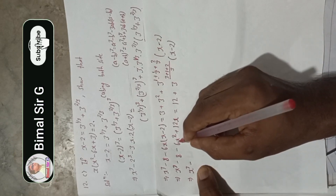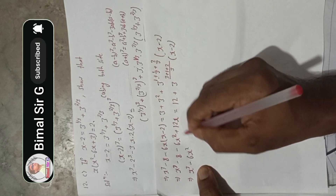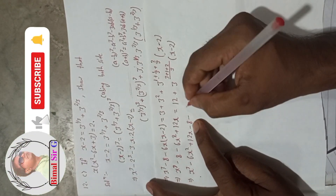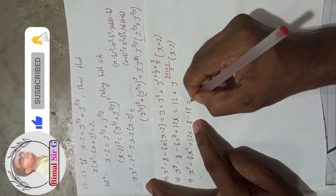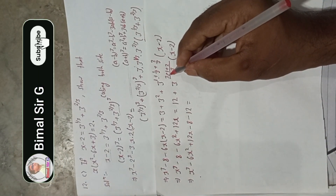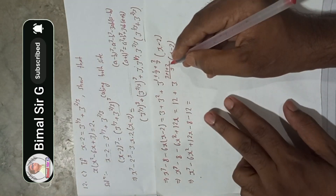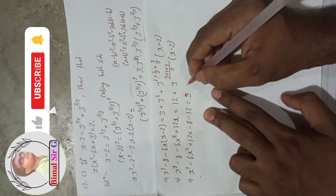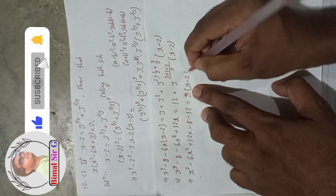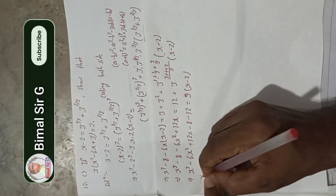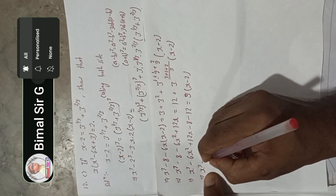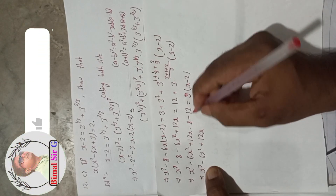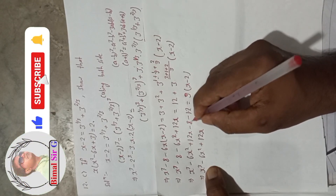So we have x³ minus 6x² plus 12x minus 8, and when the minus 12 comes to this side it becomes minus 12. This is equal to 9 times (x minus 2). Now expanding: x³ minus 6x² plus 12x minus 8 minus 12 equals 9x minus 18.